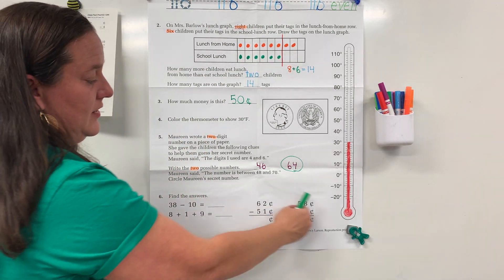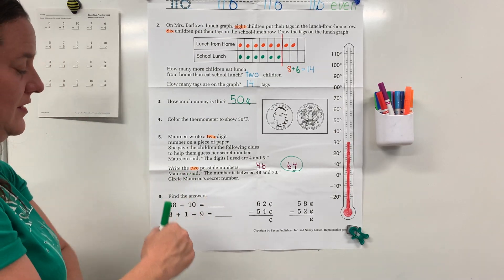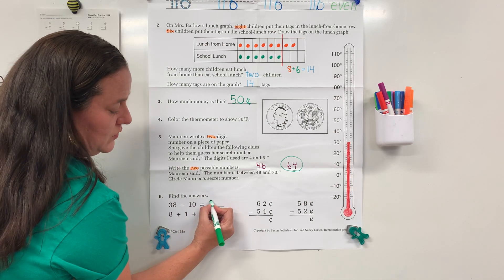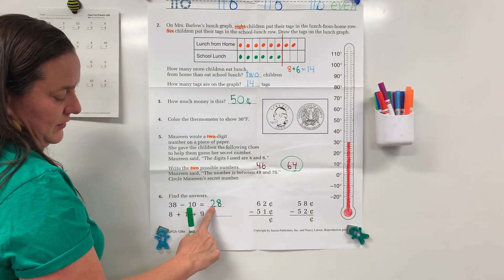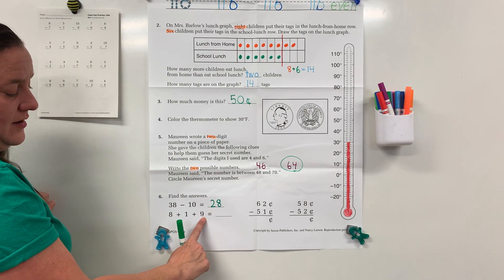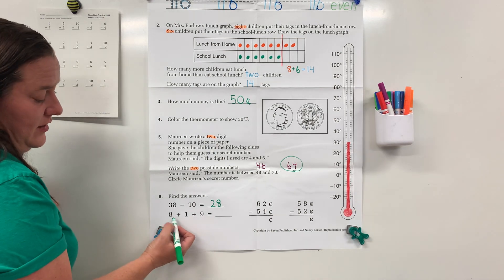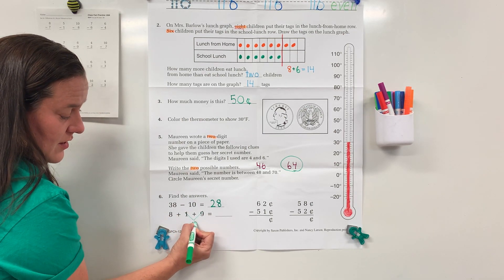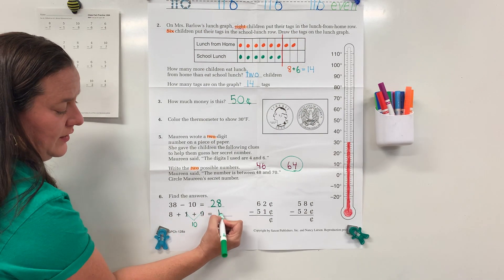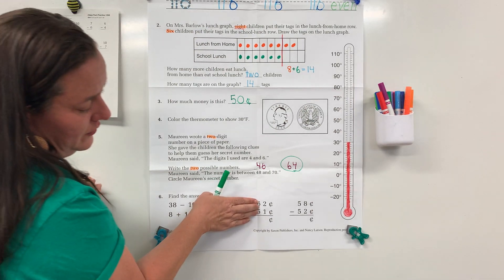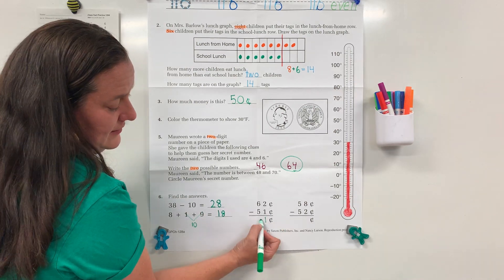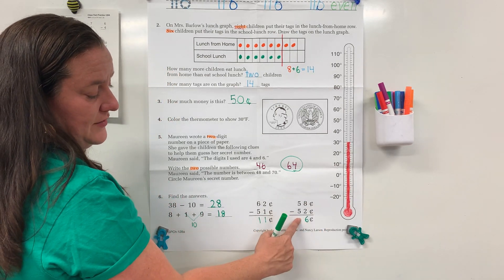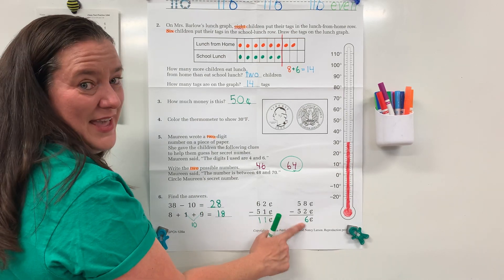Pause your video until you have these math problems done, then unpause to check your answers. Let's see what you put and you can make corrections. 38 minus 10: 38, 28. Remember, only the tens place is changing. 8 plus 1 plus 9 — you can choose any two you want to add. I'm going to do 1 and 9 first; 1 is friends with 9. Ten plus a number: we copy the 1 and write the other number. Hopefully you did the ones place first. 2 minus 1. 8 minus 2: 8, 7, 6. 5 minus 5 is zero — but do we write the zero? No. If you wrote it, just erase it and leave it as a 6.